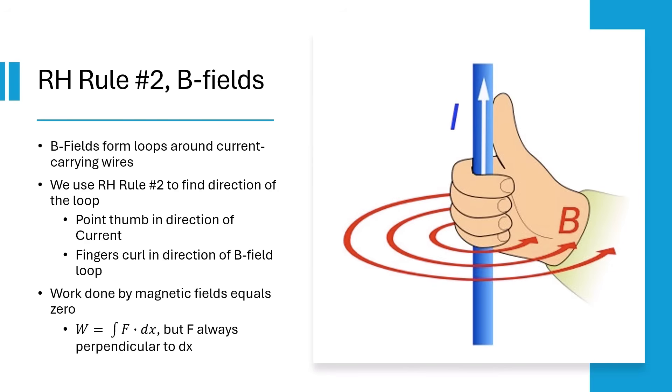In electricity, we saw that E-fields did work on charges changing their electric potential energy. B-fields are different. They never do work because cross product used to calculate force makes force always perpendicular to B-field and velocity.